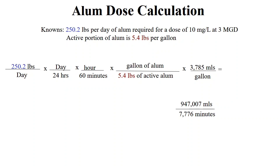Now it's just a matter of canceling units. Pounds in the numerator cancel with pounds in the denominator; days, hours, and gallons all cancel out, leaving us with milliliters per minute. Multiplying 250 times 3,785 gives 947,007 in the numerator. Multiplying 24 times 60 times 5.4 gives 7,776 in the denominator, which equals 122 mL per minute of alum.